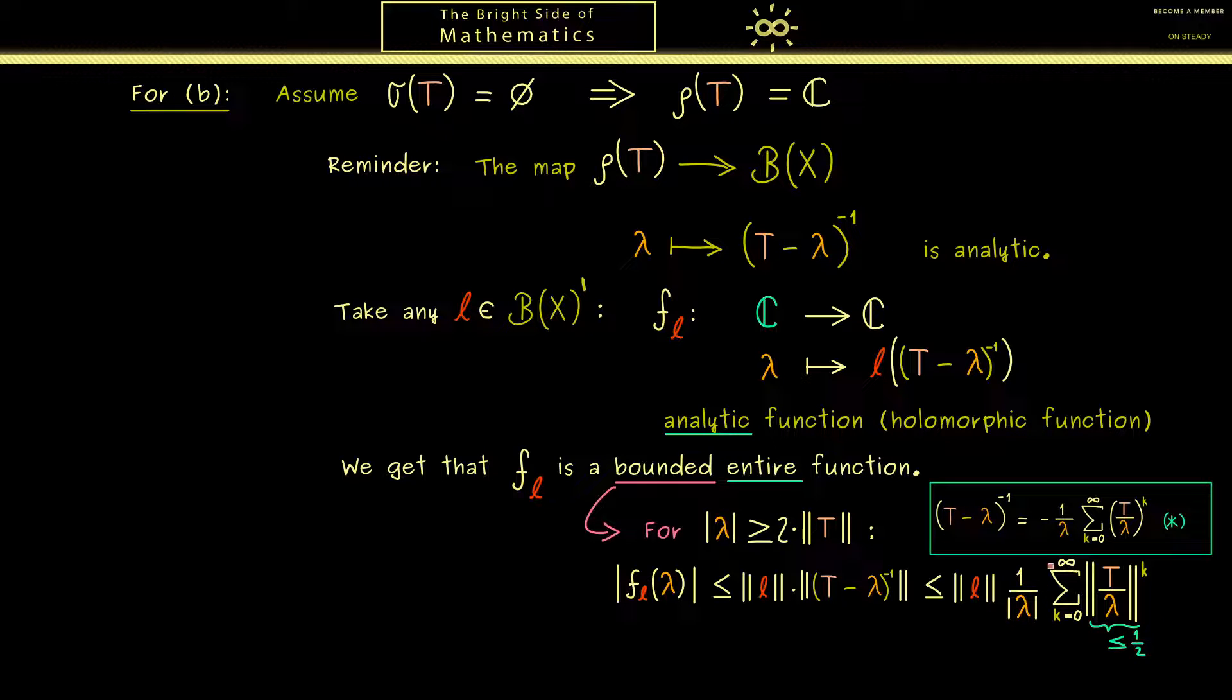So what remains here is just a geometric series you can calculate. More concretely the value is less or equal than 2. And because we can also estimate this one here we have our bound. The absolute value of our function f_l lambda is simply less or equal than the operator norm of l divided by the operator norm of T.